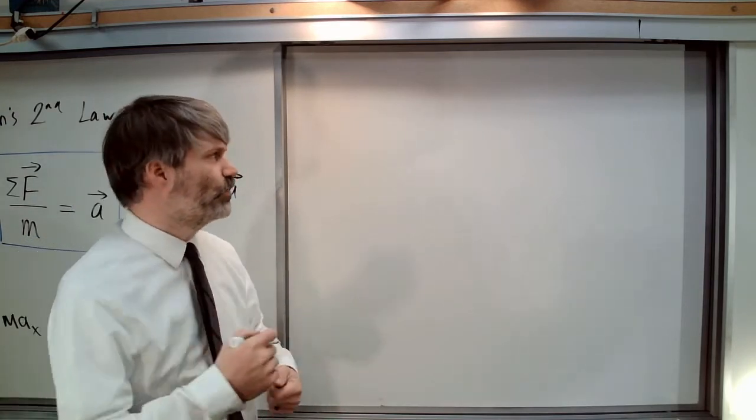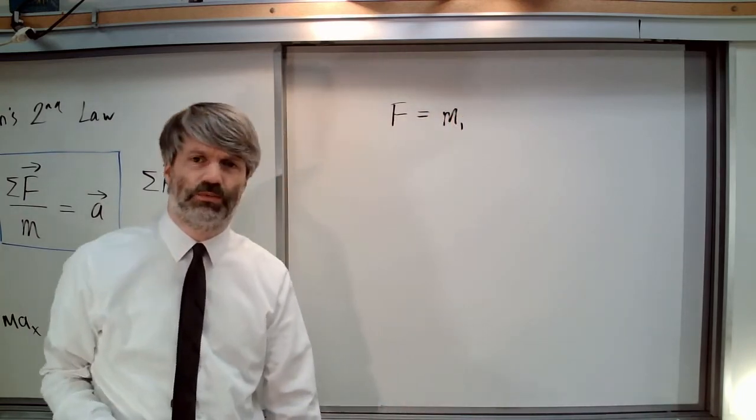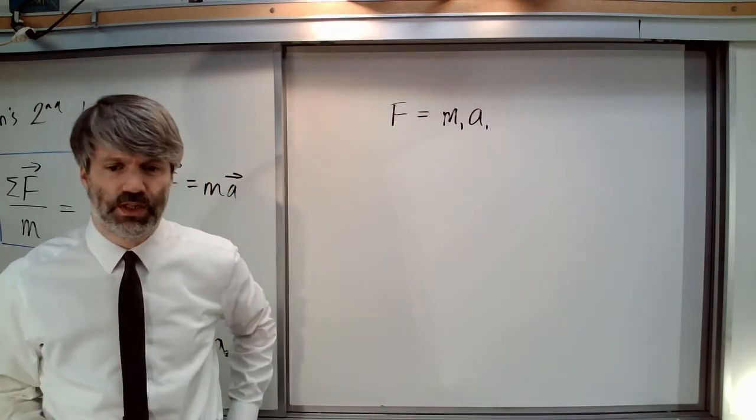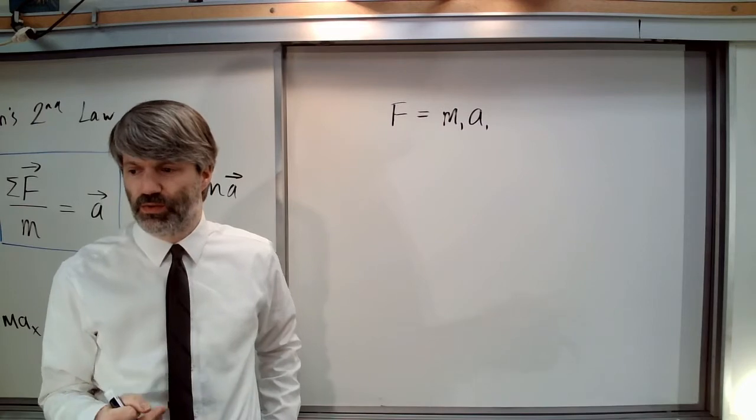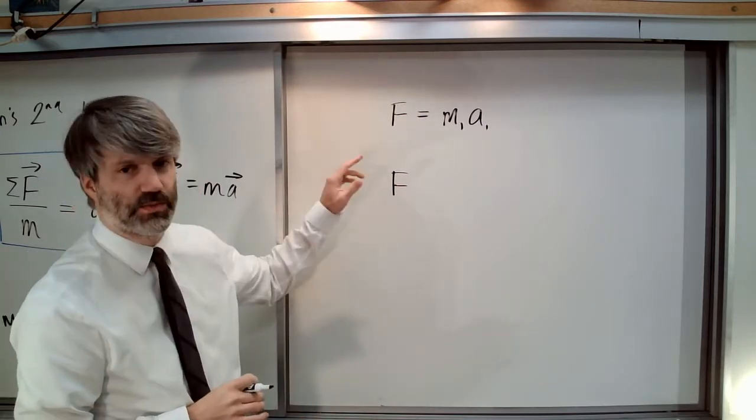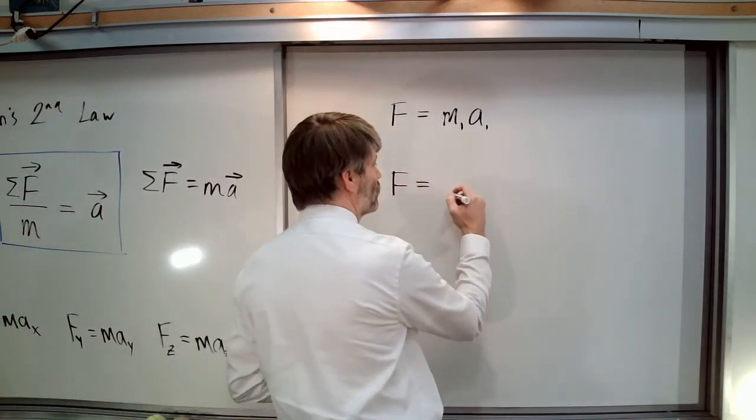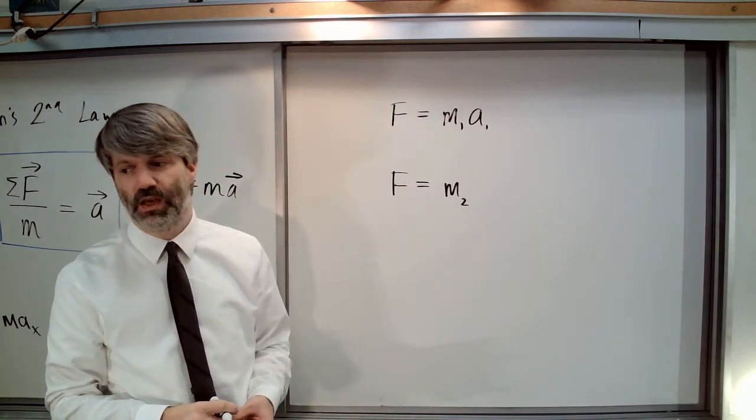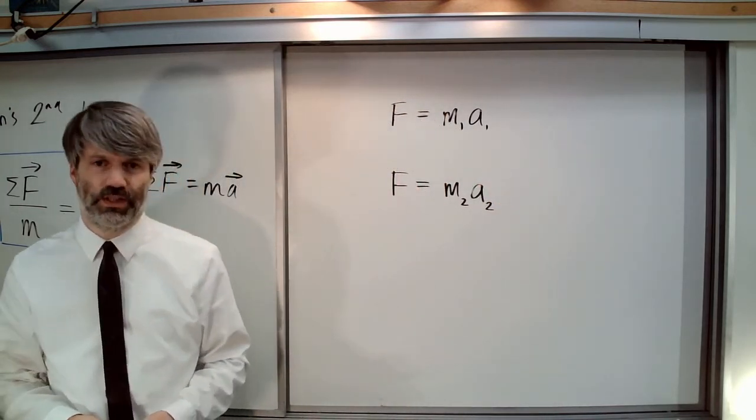What we've got is some force acting on some object of mass M1, and it gives it some acceleration A1. Now the question is, if this same force F—notice no subscript, they're the same force—is applied to a second object of a different mass M2, what acceleration will it produce?